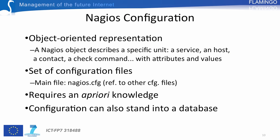Another important part is how to configure Nagios. This configuration is based on an object-oriented representation. A Nagios object permits describing a specific unit such as a service, a host, a contact, a contact group, or a check command — with attributes and associated values. Nagios also includes an inheritance mechanism based on the concept of templates, and it is possible to specify dependencies amongst objects. The configuration is typically based on a set of files; the main file is nagios.cfg, which refers to other configuration files.